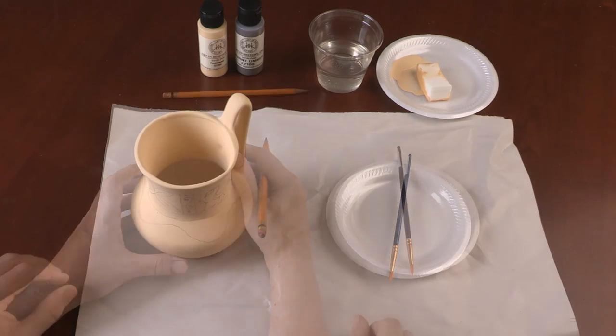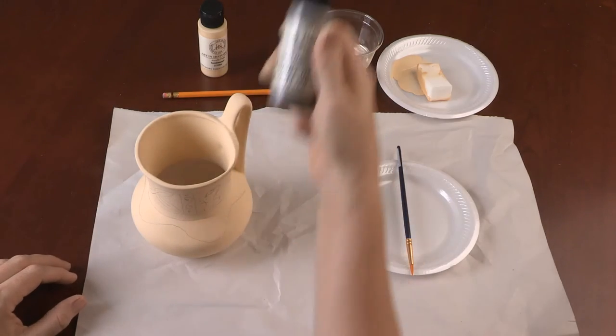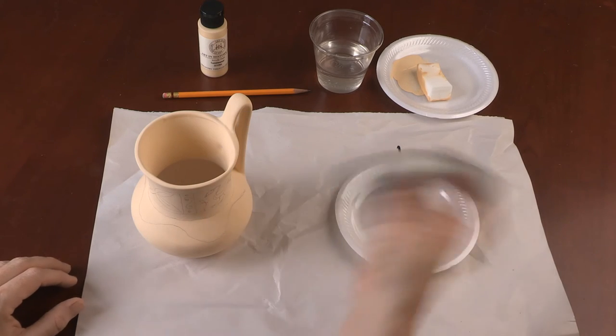Once you are satisfied with your designs, squeeze a small amount of the burnt umber paint onto the second clean plate.